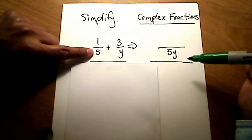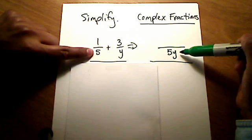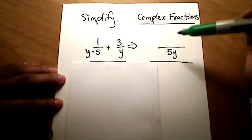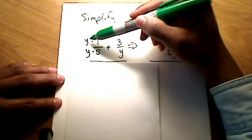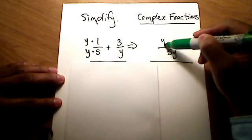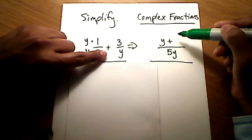Alright, so this fraction, if I want its denominator to look like 5y, I have to multiply it by y. Well, if I do that to the bottom, I must also do it to the top, to its numerator. So my numerator now is just y. Here's my plus sign being carried over.